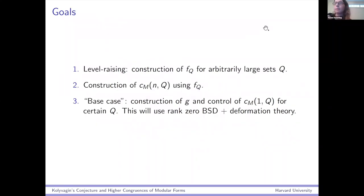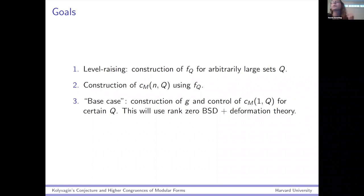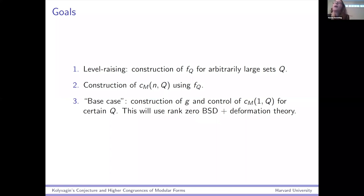Let me say what I want to do in the rest of the talk. First I want to tell you about level raising — how do we make these mod P^M forms F_Q? Remember from the structure of the proof, we need a lot of them. The second thing is how you construct the CM(N,Q) using this form F_Q. Finally, I want to talk about what you could call the base case — the construction of this one very special form G, and controlling CM(1,Q) for this one very special Q.